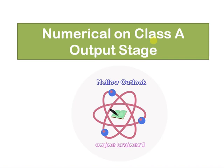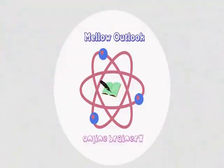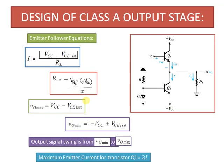Welcome to the tutorial on numericals on Class A output stage. Before we proceed into the numericals, let us look into the design of the Class A output stage. Here we have the emitter follower, and we have seen in the previous tutorial wherein we explained the Class A output stage and why this emitter follower is different from the regular emitter follower that we have studied.